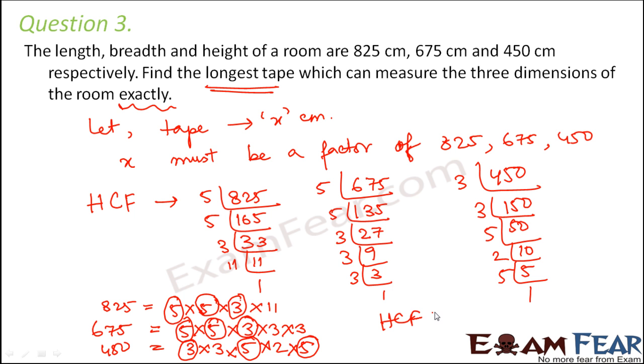Therefore, what would be HCF? HCF would be equal to 5 into 5 into 3, that is 75. So therefore, the length of the longest tape would be 75 centimeters.